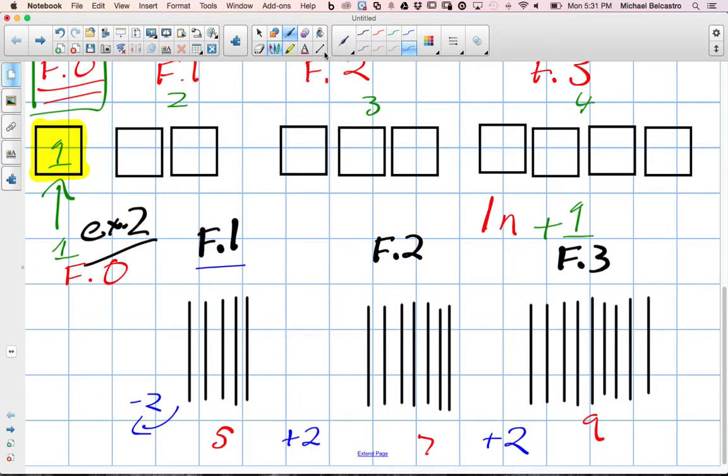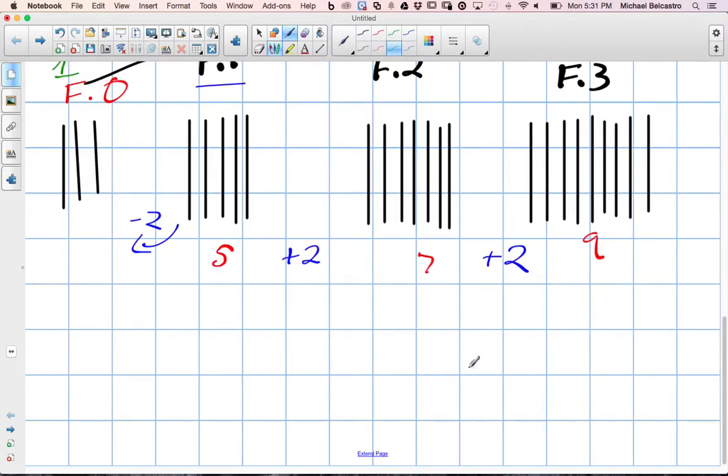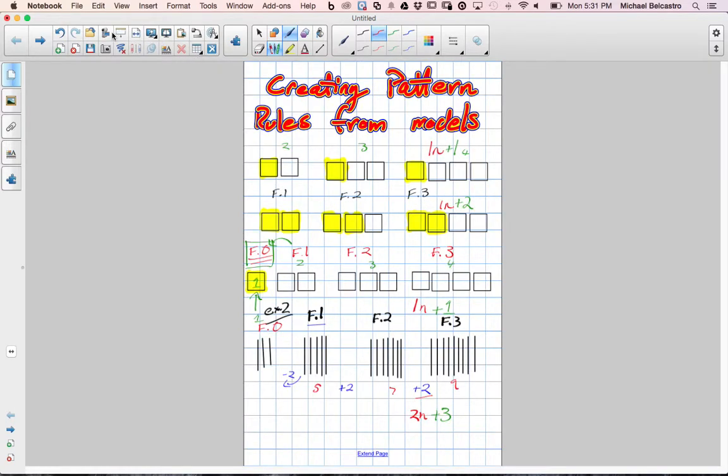So when you subtract two, how many sticks should we have? Three. Three, which means what's the constant in this equation? Three. That's right. So we have three as our constant and what number are we increasing by every time? Two. That's right, we increase by two. So our equation would be 2n plus three. So now we can kind of answer that hard question.